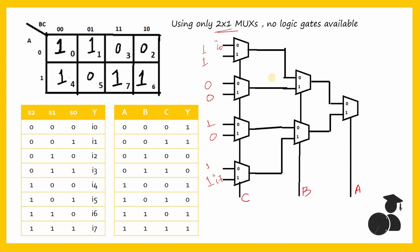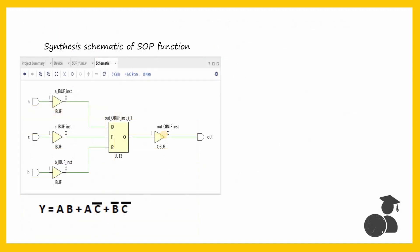You must be wondering: why do I need to know how to implement logic functions using a multiplexer? Isn't it simpler to just solve the SOP function, obtain the expression, and implement it using logic gates? The answer is: when we synthesize an SOP function for implementation on an FPGA, we get a specific circuit. Like in my earlier videos, I wrote the Verilog code for the SOP with minterms 0, 1, 4, 6, and 7, synthesized it in Vivado for a Xilinx Spartan 3 FPGA, and got this synthesized schematic. You can see that an LUT is used here.